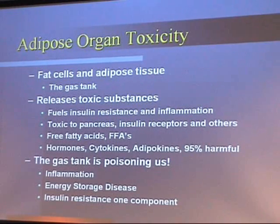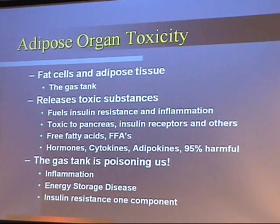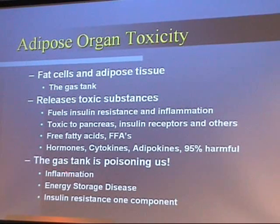Now let's talk about inflammation. Fat tissue is an organ — and unfortunately, that organ is inflammatory and toxic. We think of it as a gas tank that's poisoning us: it releases toxic substances fueling inflammation and insulin resistance, and is toxic everywhere in the body. As we gain weight, we have circulating triglycerides and free fatty acids that are directly toxic, and the adipose tissue releases hormones or cytokines of which 95% are harmful.